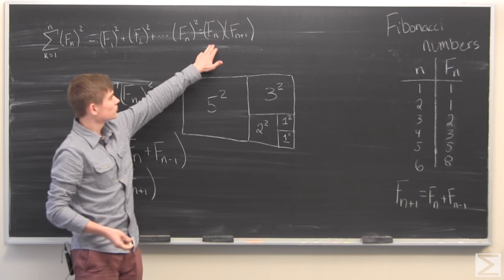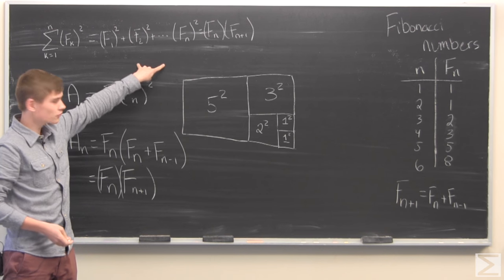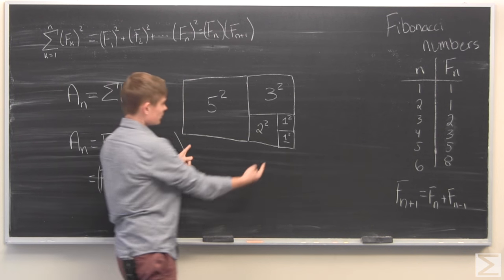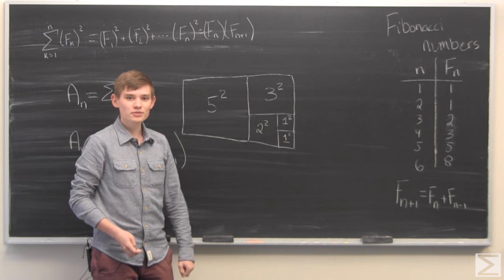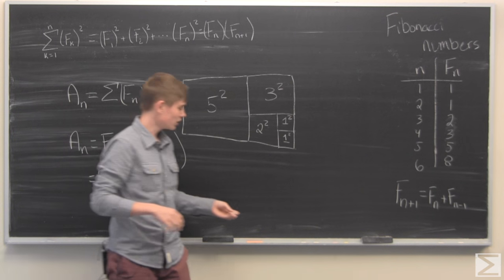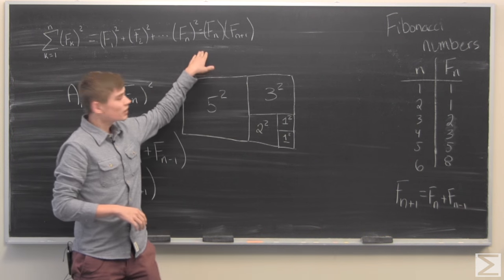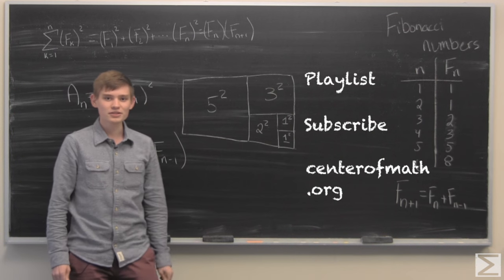And so we've shown that these two areas are the same, and therefore these two formulas are the same, which is why these squares fit so nicely together based on the defining property of the Fibonacci numbers. And so that's just a really cool proof on this particular identity of the Fibonacci numbers. And that is this week's problem of the week.